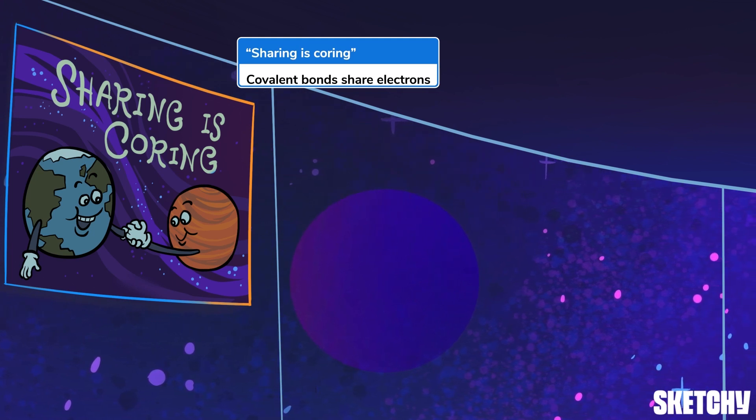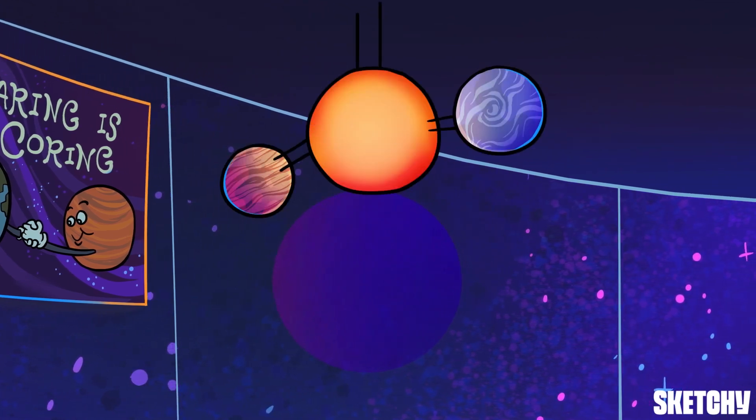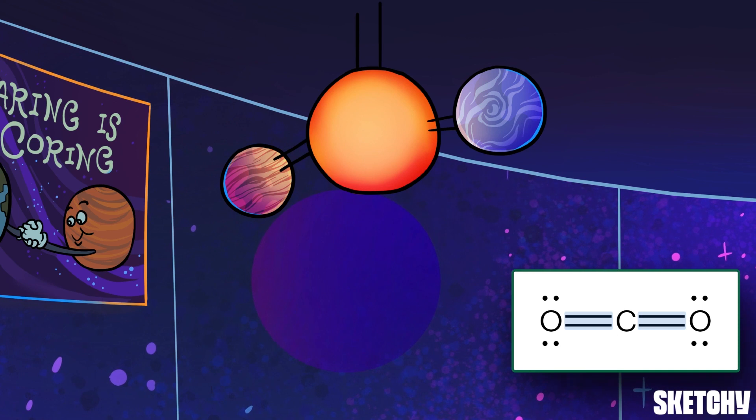In Lewis dot diagrams, each line represents a pair of electrons that are shared in a covalent bond, much like how these sticks are shared between the sun and planets to bond them together.